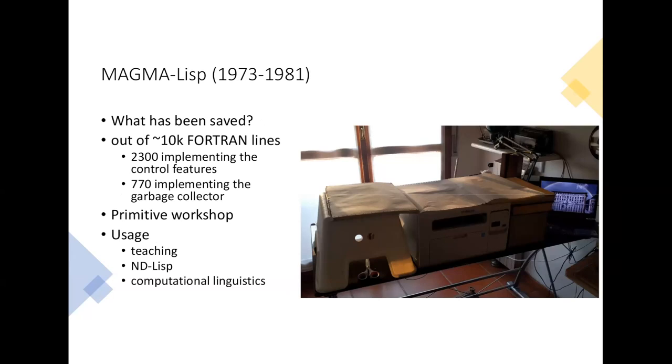What has been saved? Well, as I said, out of 10,000 lines, 2,300 implementing the new control features and 700 lines implementing the garbage collection. There is a sort of commonality with the first thing. As you can see, that's my primitive workshop for digitizing the code. So there I had to go and digitize—I couldn't type the thing in there.